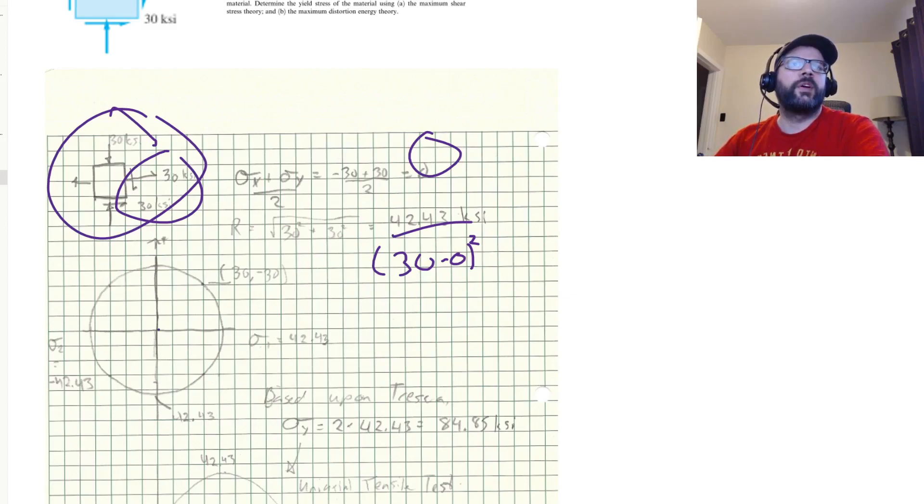So we can draw a Mohr's circle here. So again, that's kind of the known point. And we are worried about our principal stresses. So again, principal stresses, we've got origin at 0. So the principal stresses are just going to be plus and minus the radius. So 42.43 and negative 42.43 right here and here.